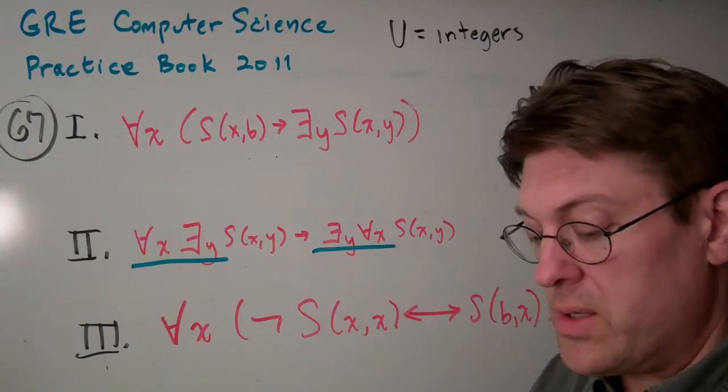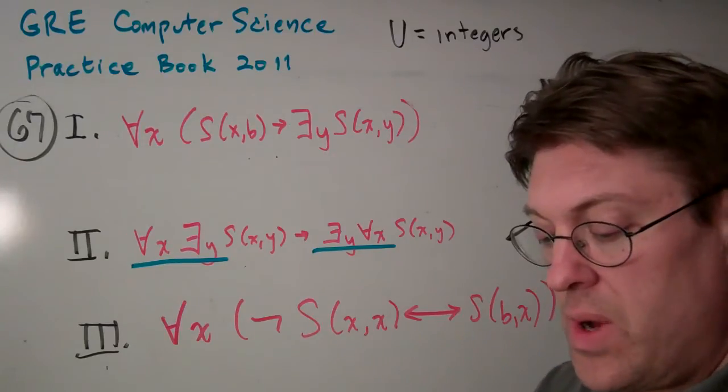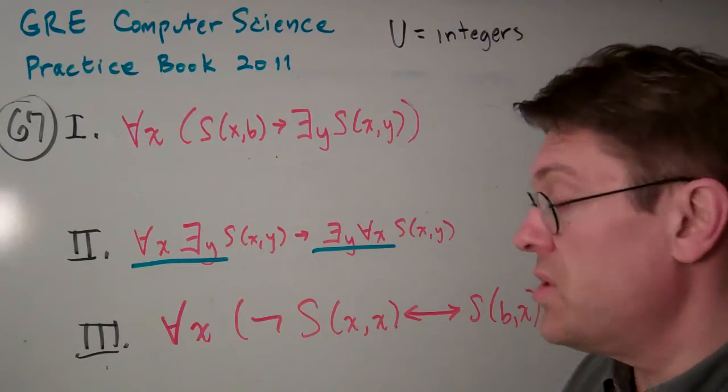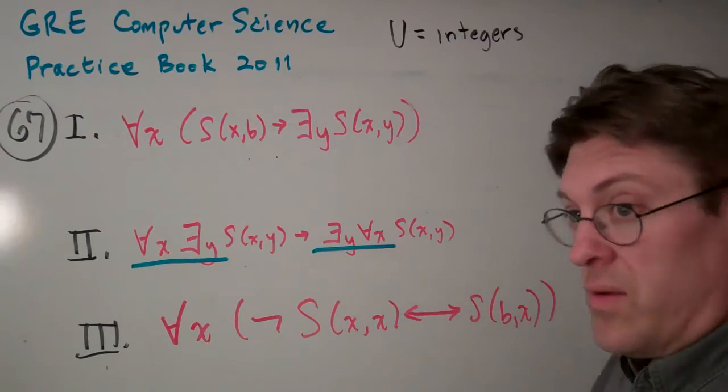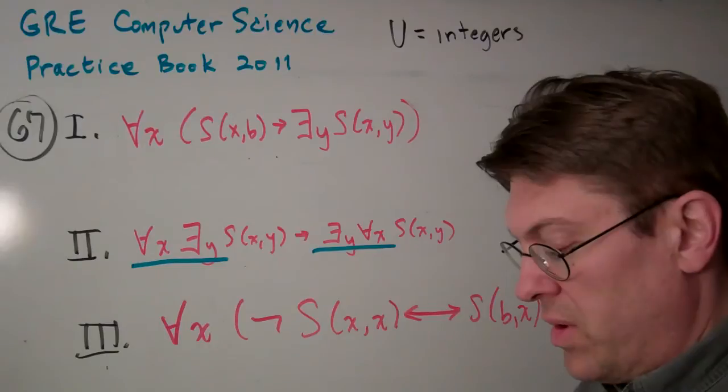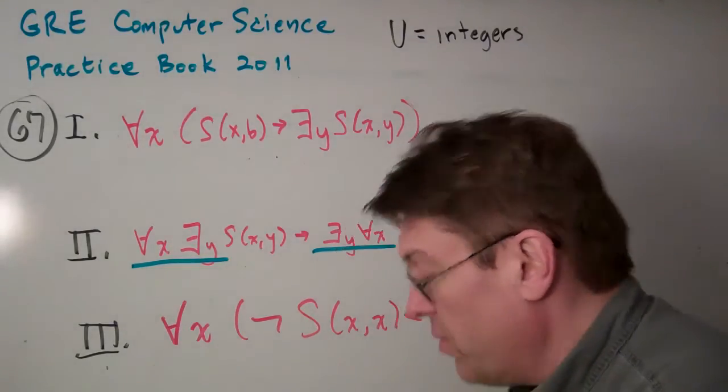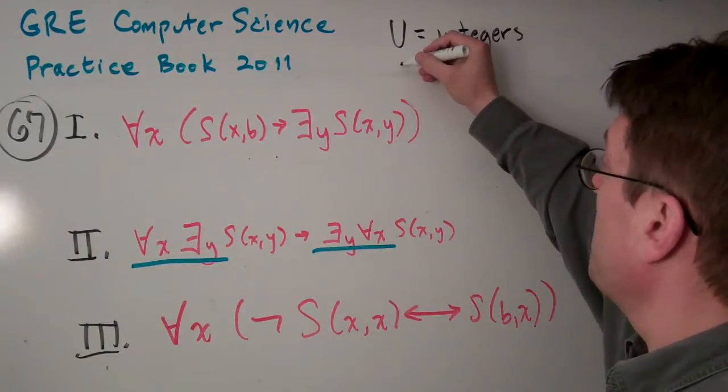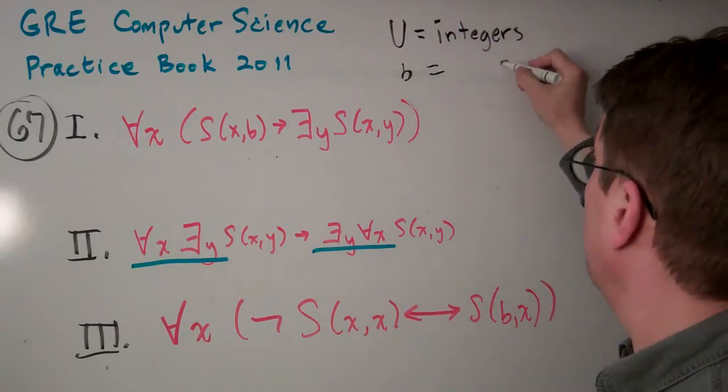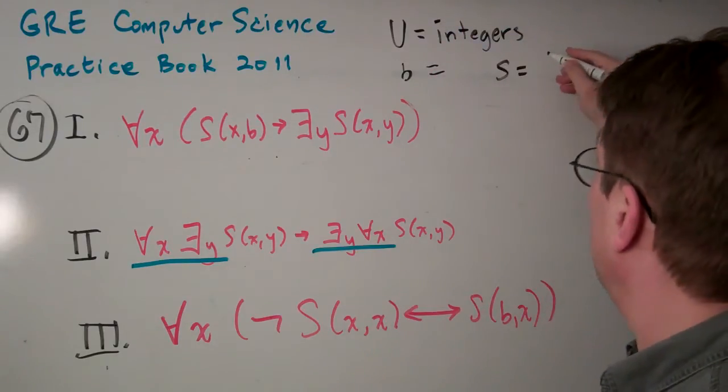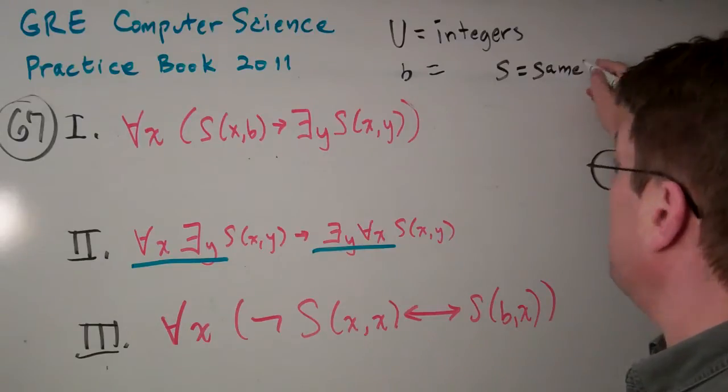Consider the following predicate logic statements in which B, X, and Y are elements of the universe U. It's usually easier to look at these things and to imagine a real universe and real numbers. Let's pick B equals 4, for example, and let's pick a universe of integers here and let's just have S interpret that to mean the same, so equals.